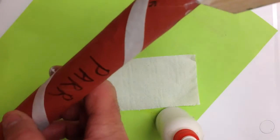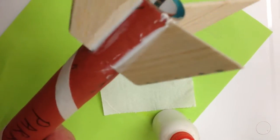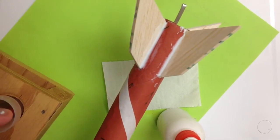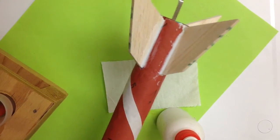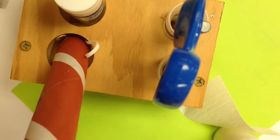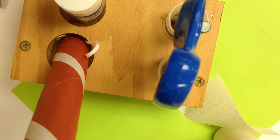What I like to do as I'm gluing my fins on, and as I'm doing this, I like to put my rocket in the holder like this to hold it so that my fins aren't getting bent.